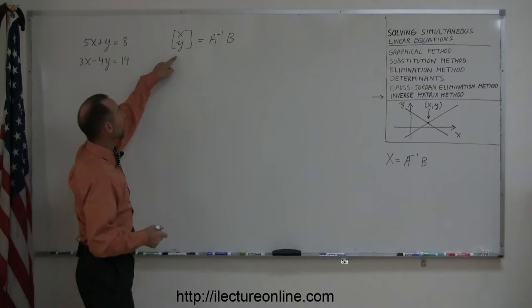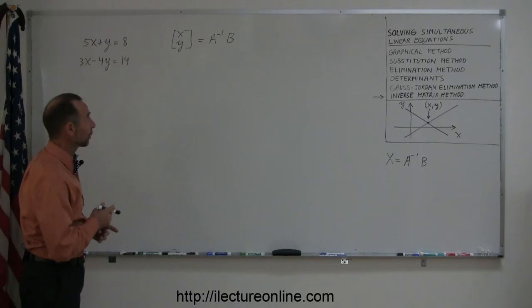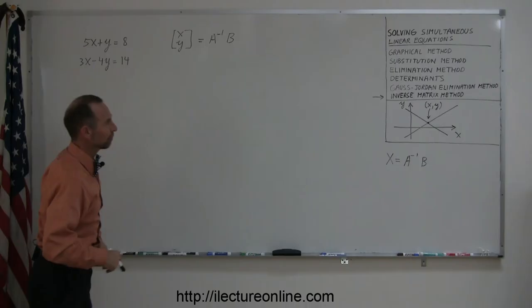Again, to find the x and y value of the solution to these two equations, in other words, the x and y coordinates of the point where the two lines cross, can be found by taking the inverse matrix of A and multiplying by the matrix of B.